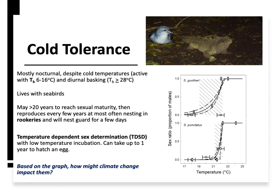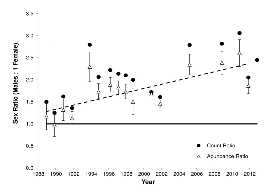If warmer temperatures produce more males, as temperatures increase — especially in New Zealand, which is located near the poles and seeing greater rates of warming than the rest of the world — you would expect an increasing proportion of males over time. And that is what you do see: when you do population counts, you're seeing more males than females over the last few decades.